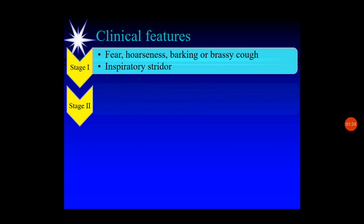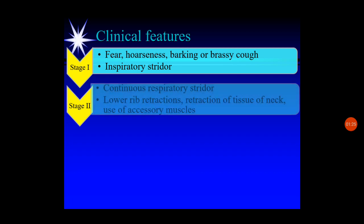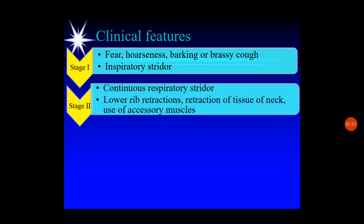In stage two, when further narrowing occurs, there is continuous respiratory stridor — initially only inspiratory, but now occurring in both inspiration and expiration. Lower rib retractions, retraction of neck tissue, and use of accessory muscles are also noticed.